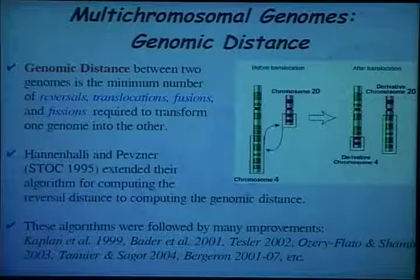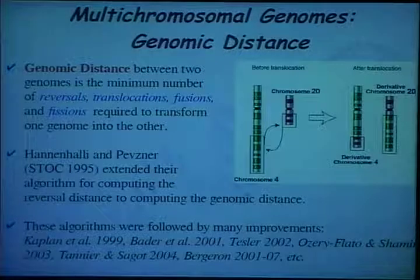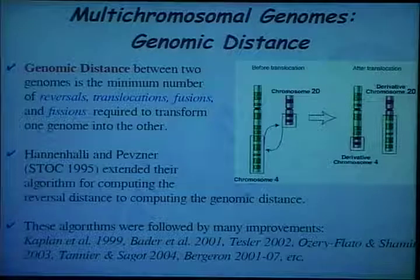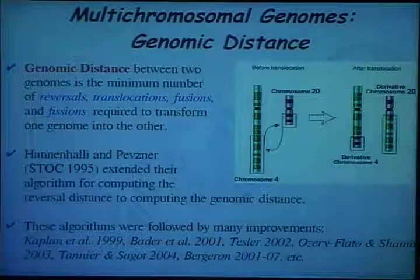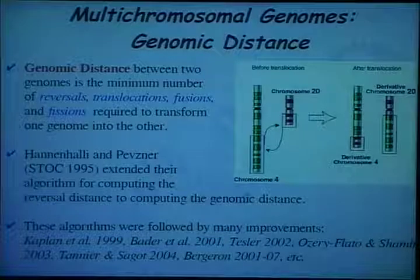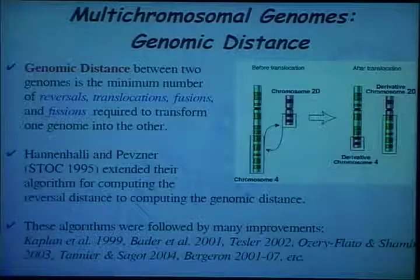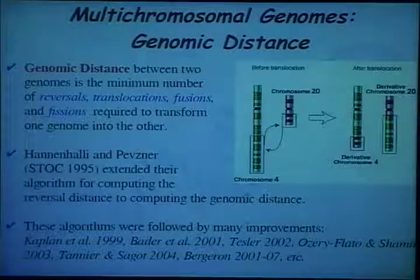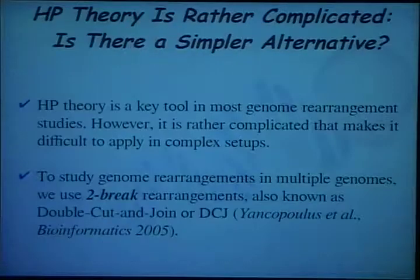Later that same year, we expanded the algorithm to computing genomic distance that includes more rare event operations on multi-chromosomal genomes, such as translocations, fusions, and fissions. Both these developments were subject to many improvements, but still the model is rather complicated.